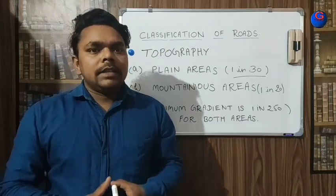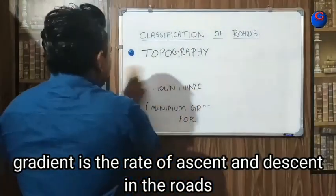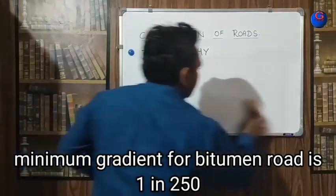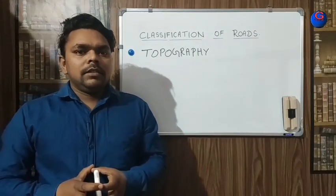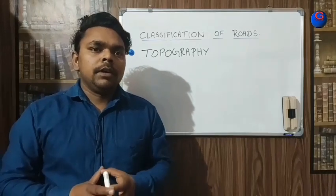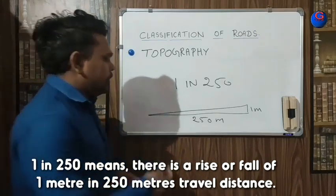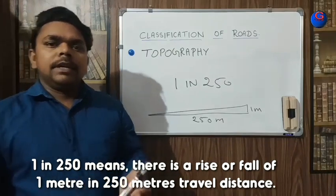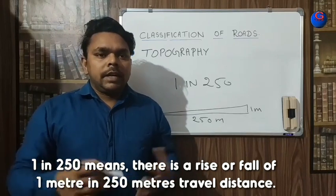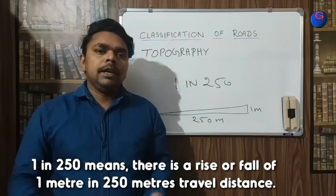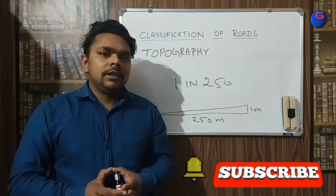What is gradient? Gradient is a rise or fall in level — it is a continuous longitudinal slope along a road. For example, a gradient of 1 in 50 means that when you travel 50 meters ahead, you rise or fall by 1 meter. The gradient can be downward or upward depending on the terrain.